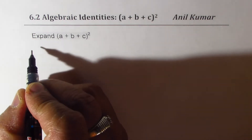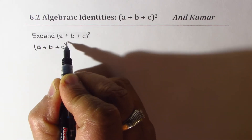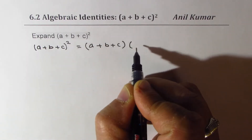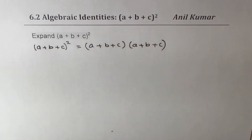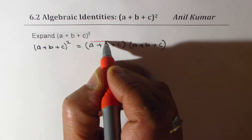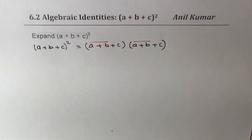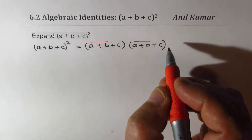So let's multiply — we have (a+b+c)² which really means we should be multiplying (a+b+c) by itself. We know how to handle (x+y)², so what I can do here is make groups, treating (a+b) as one number and c as the other number.